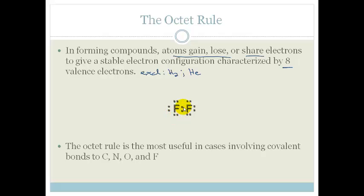And we can see we've got 8 around that. It says the octet rule is the most useful in cases involving covalent bonding for carbon, nitrogen, oxygen and fluorine. So it helps us remember how we are going to have to bond. Everything is trying to get your 8 electrons around it.